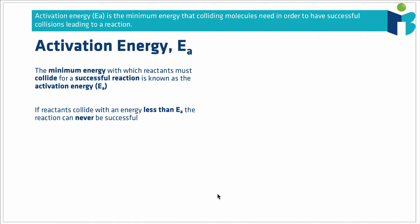That sufficient energy criterion is really talking about the concept of activation energy. The activation energy is defined as the minimum energy with which reactants must collide for a successful reaction, and it's often given the symbol Ea. This means that if two reactants collide, even if they're in the right geometry, but they collide with an energy less than the activation energy, a reaction will never occur.